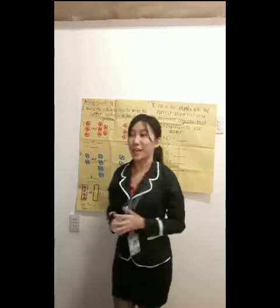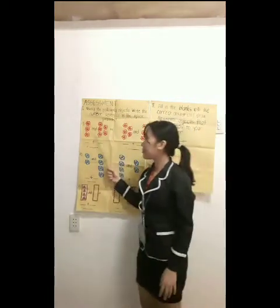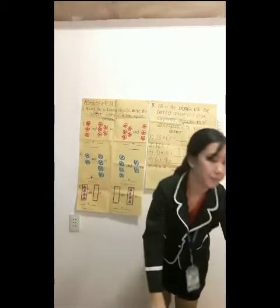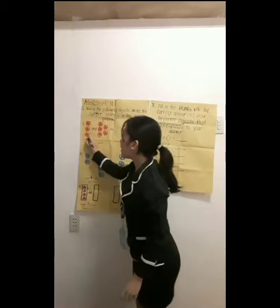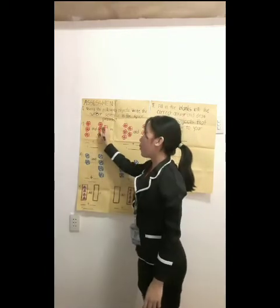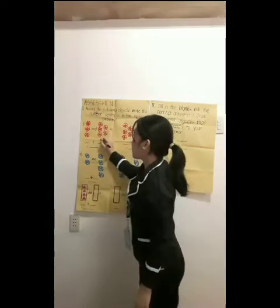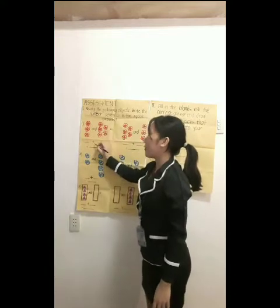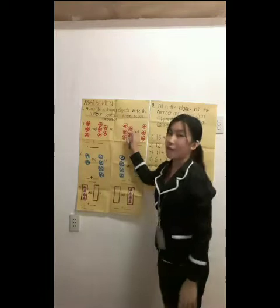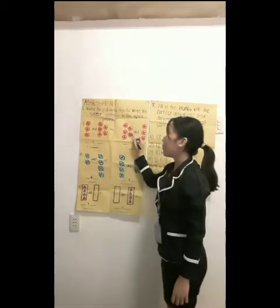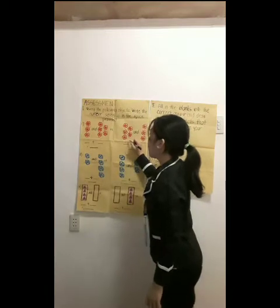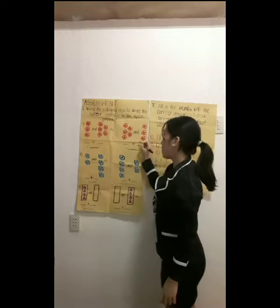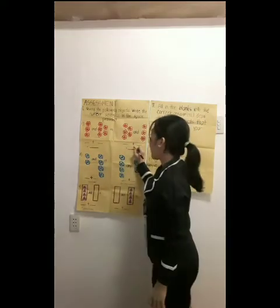Class, are you done? Exchange your paper with your partner. For number 1, let's check. We have 1, 2, 3 — so we put 3. And plus 1, 2, 3, 4, 5 — we have 5. How many flowers are there? 1, 2, 3, 4, 5, 6, 7, 8 — there are 8 flowers. On the other side: 1, 2, 3, 4, 5 — 5 flowers in the first set. Second set: 1, 2, 3 — 3 flowers, and we have a total of 8 flowers.